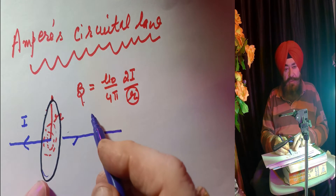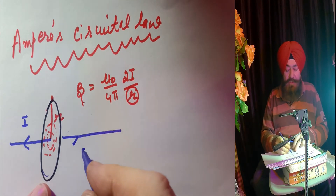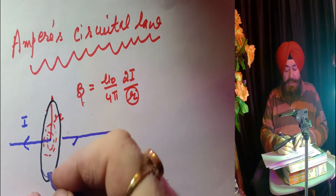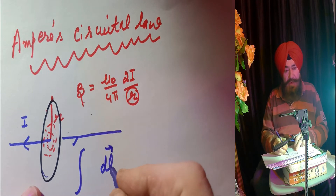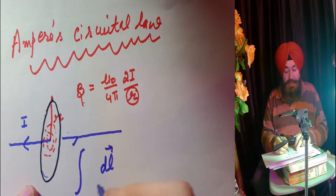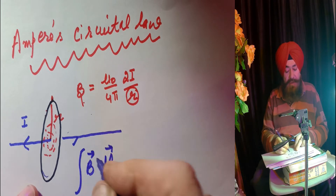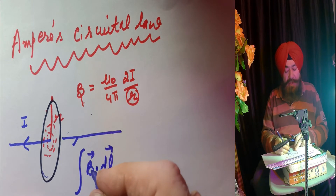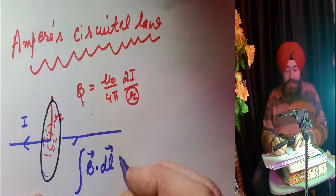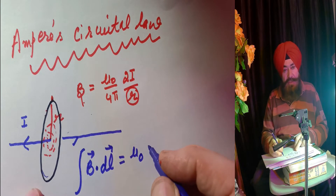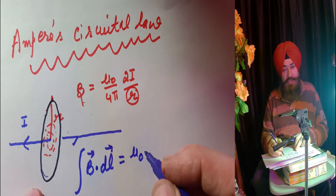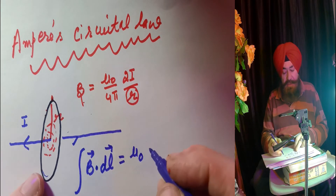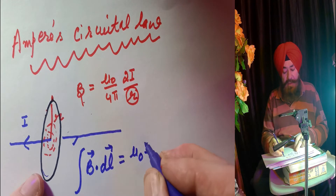Now, the Ampere's Circulation Law states that the circulation of the magnetic field along the closed loop — circulation means ∮B·dl along the loop — is equal to μ₀ times the total current threading the loop. That total enclosed current is I.